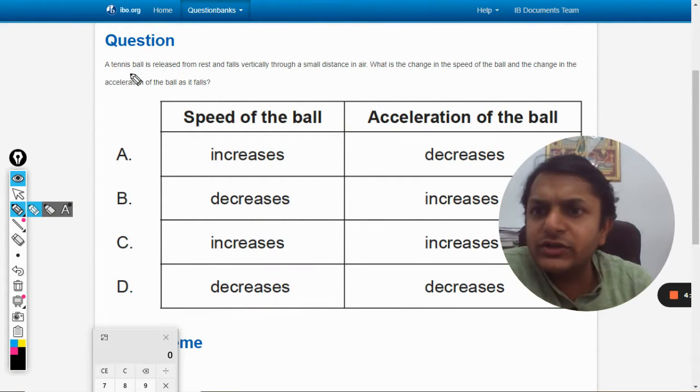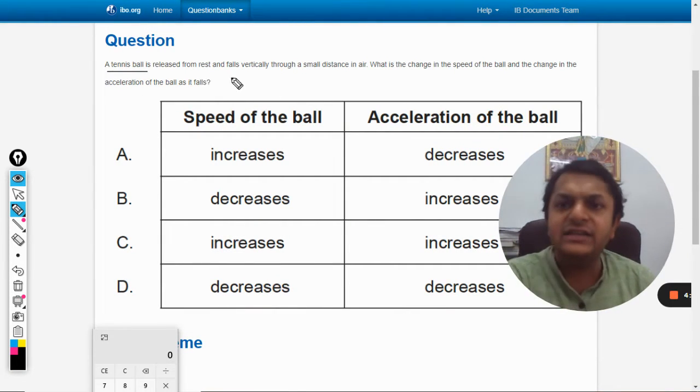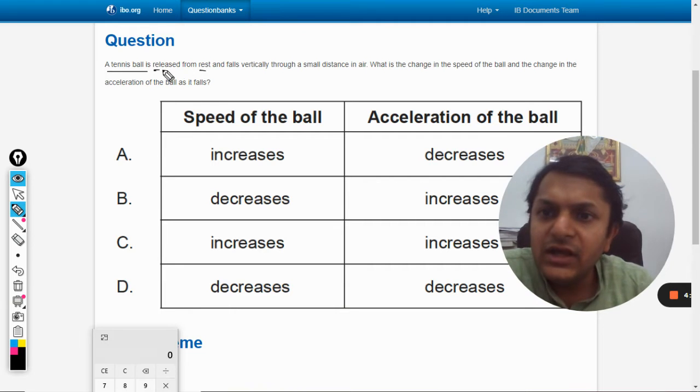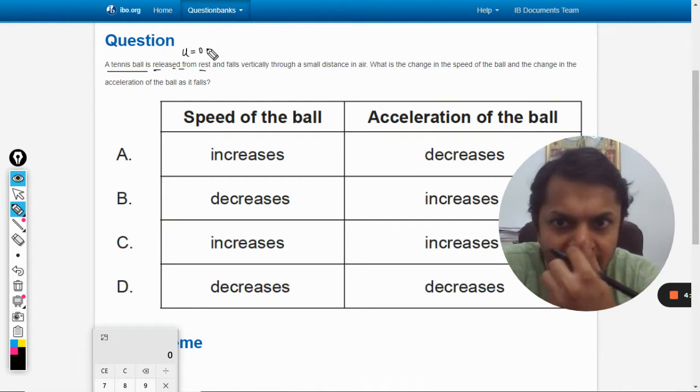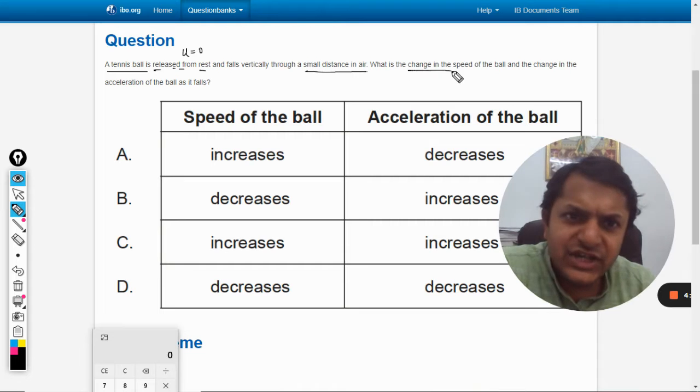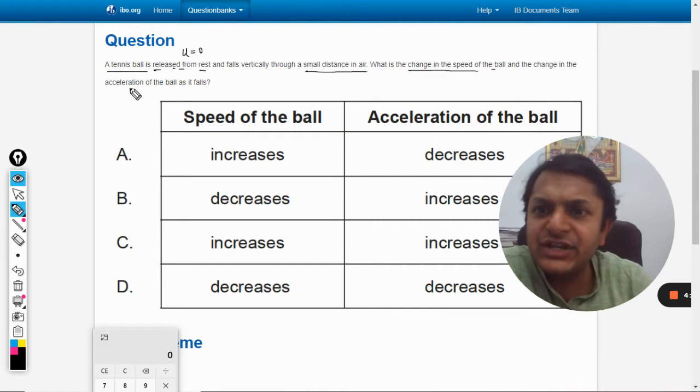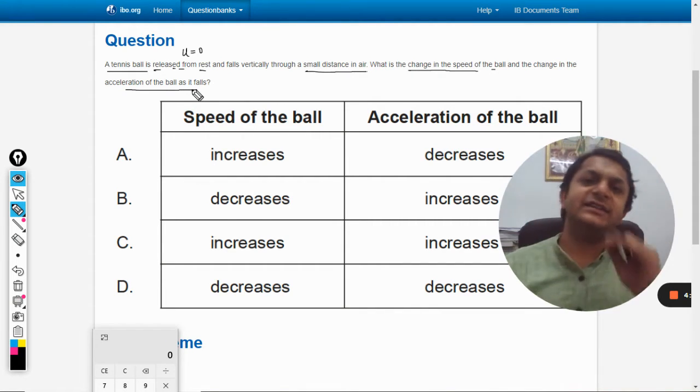Okay dear students, in this question a tennis ball is released from rest, meaning the initial velocity of the ball is zero, and falls vertically through a small distance in air. What is the change in speed of the ball and change in acceleration of the ball as it falls down?